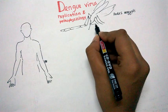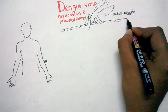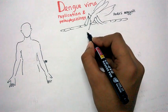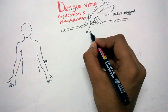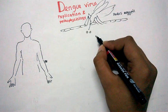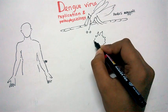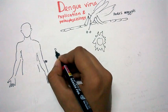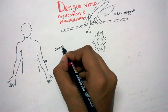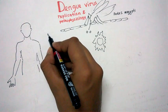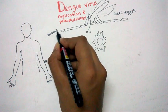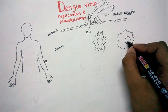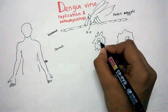Here we have the epidermis region, beneath that we have the dermis region. Here the dengue virus is injected by this mosquito and there are some dendritic cells beneath the epidermis in the dermis region.